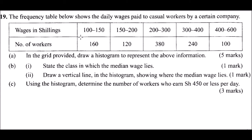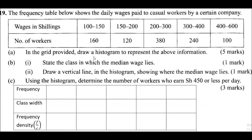We are given the number of workers and told to draw a histogram on the grid provided. A histogram is drawn like a bar chart but it is the area of the bar that represents the frequency, not the height. Since the intervals are unequal, we need to prepare a table to help us draw the histogram correctly.